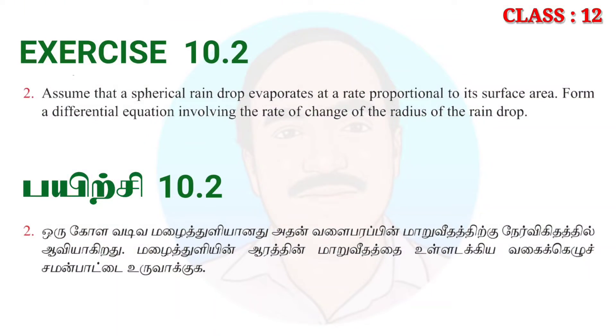Assume that a spherical raindrop evaporates at a rate proportional to its surface area. Form a differential equation involving the rate of change of the radius of the raindrop.